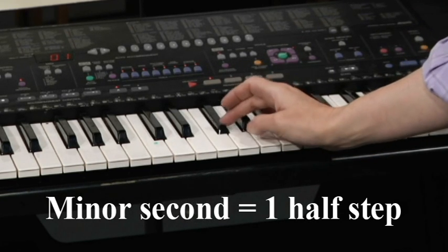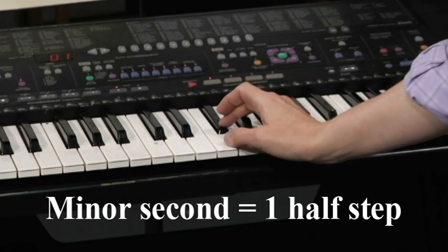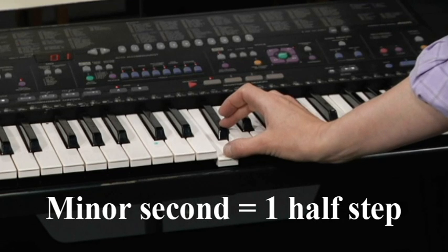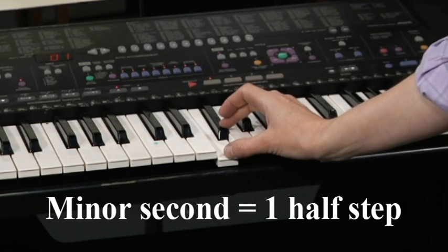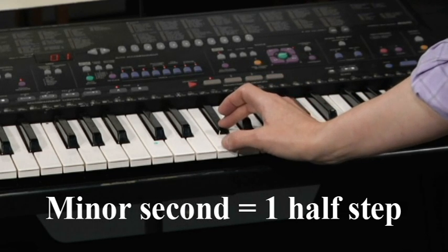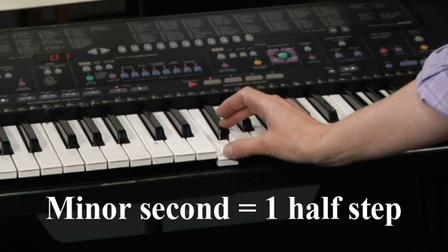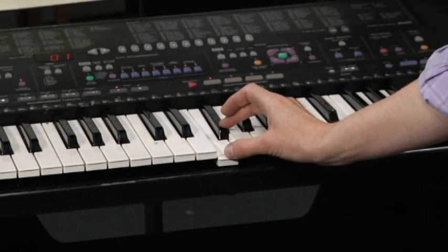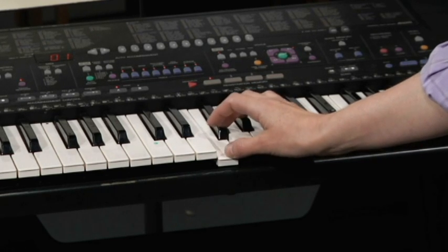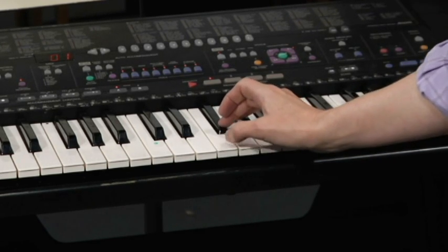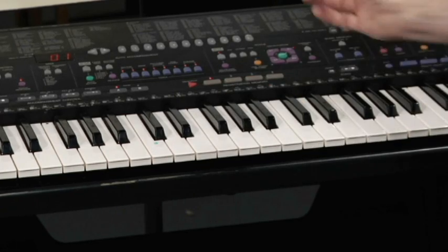Now the problem with this is, if we're thinking of this as F sharp and this is F, those are the same letter names. So that can't be a second, because a second would have to be an F sharp to some kind of an E. Well, that's okay though. We can kind of recreate that E as an E sharp, and now it's going to work.